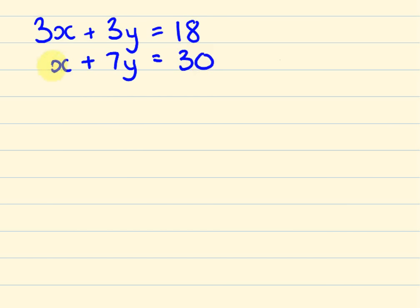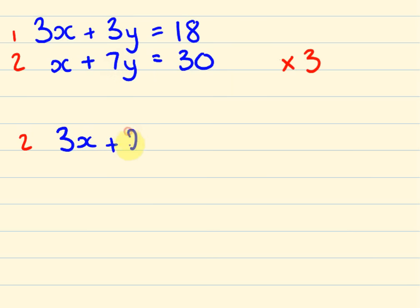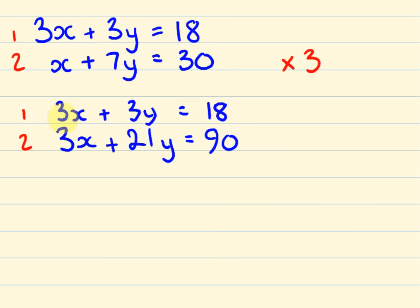This will be an example where I start getting faster. We have to make — again — I'm going to work with this. This is the easiest variable to work with here. It's just as easy to multiply this equation by 3. If we do that, what we end up with for equation 2 — multiplying it all by 3 — is 3x, plus 7 times 3 which is 21y, equals 3 times 30 which is 90. Equation 1 stays as 3x plus 3y equals 18, and we're happy because the coefficients in front of x are now the same.